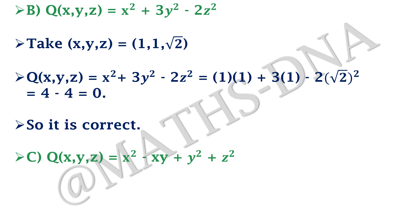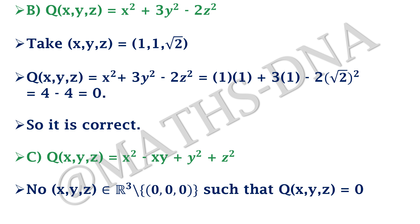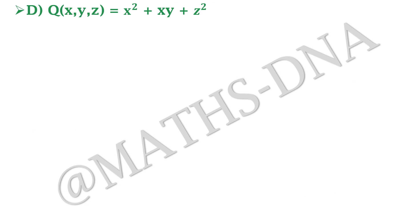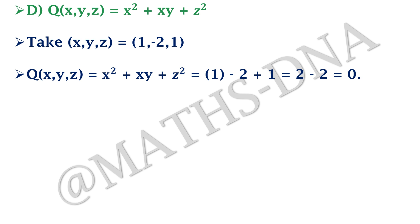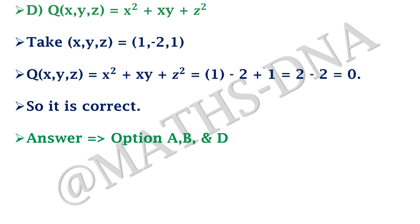Option C: Q(X,Y,Z) = X² − XY + Y² + Z². Here you cannot find any (X,Y,Z) in R³ minus {(0,0,0)} such that Q = 0, because you have three squared terms that are always positive, and the −XY term will not be enough to make the equation zero. So Option C is incorrect. Option D: Q = X² + XY + Z². Take (X,Y,Z) = (1, −2, 1), giving 1 − 2 + 1 = 0. The correct answers are Options A, B, and D.